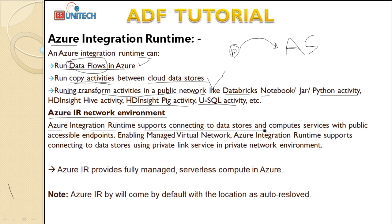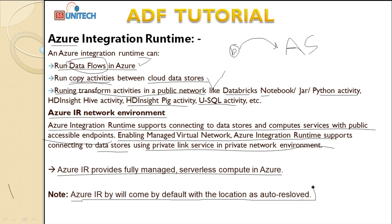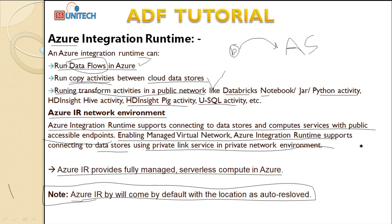Regarding the Azure IR network environment: Azure IR supports connecting to data stores and compute services with publicly accessible endpoints. It also enables managed virtual network. Azure IR runtimes also support connecting to data stores using Private Link Service in private network environments. Azure IR provides fully managed serverless compute in Azure, and by default it will be available with the location set to auto-resolve.